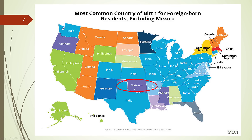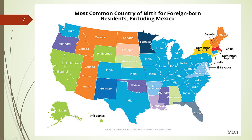And then if we look at Oklahoma, right above Texas, that population is mostly from Vietnam. In California, immigrants mostly come from the Philippines. In Montana, Idaho, Utah, and Arizona, they come from Canada.